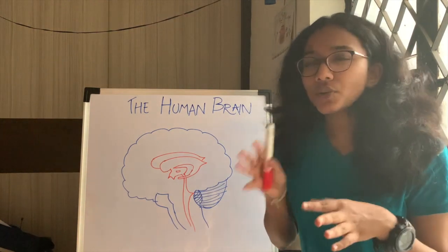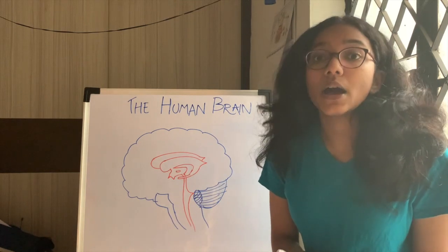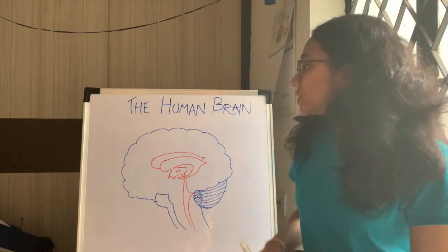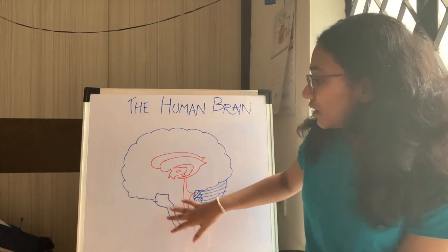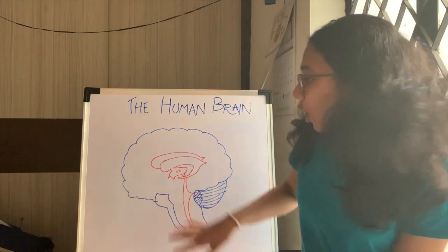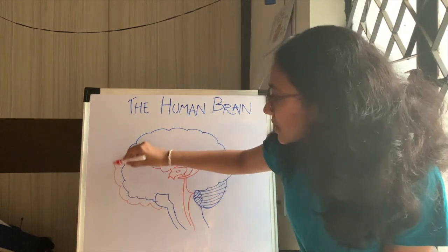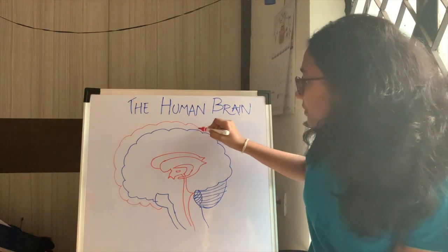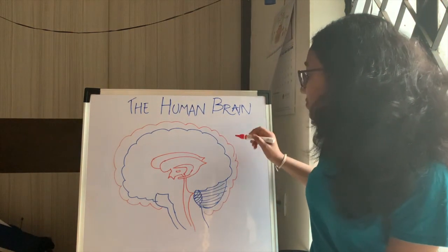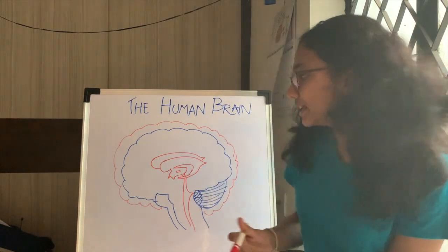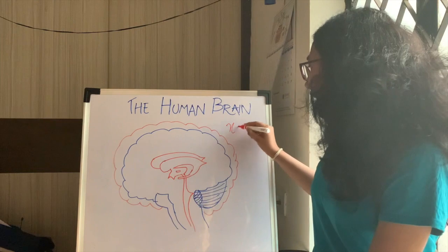Cerebrospinal fluid is very important for the functions of the brain and it performs three functions. The first one is buoyancy. Cerebrospinal fluid surrounds the brain and the spinal cord all around, in the subarachnoid space — that is, the space between the arachnoid layer and the pia matter — there is cerebrospinal fluid.